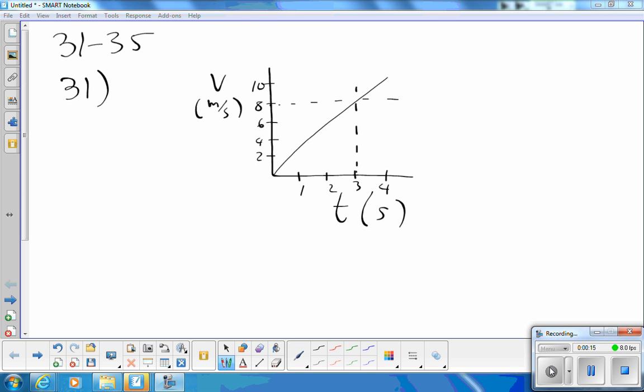And velocity versus time graph, and if I want to get displacement, I'm looking for the area under the graph. And I'm only going up to the three second mark, which corresponds to eight meters per second. That area, being a triangle, is one half base times height. One half, three seconds is the base. The height is eight meters per second. And I get twelve meters, which is choice A.